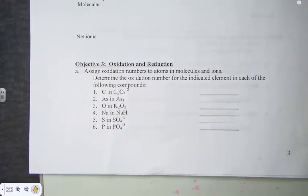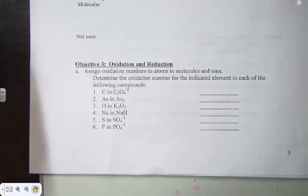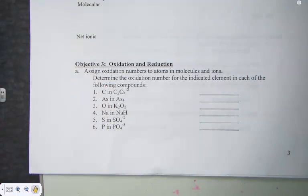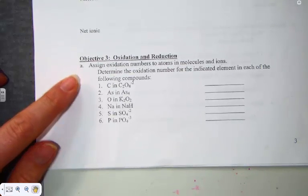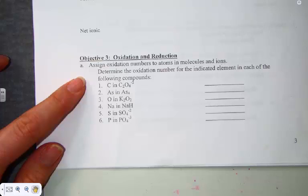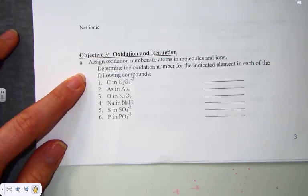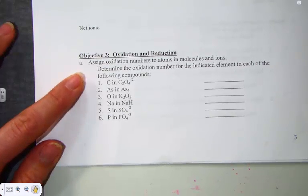We're in the aqueous solutions chapter looking at our practice test A, and we're going to talk through the solutions of our third objective, all related to the term redox, oxidation and reduction. The first of our problems is asking us to assign oxidation numbers to atoms in molecules and ions, determining the oxidation number for the indicated element in each of the following.